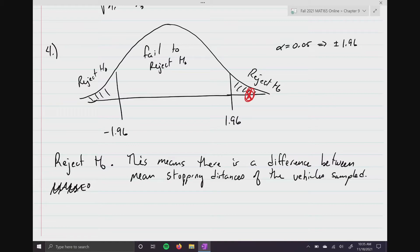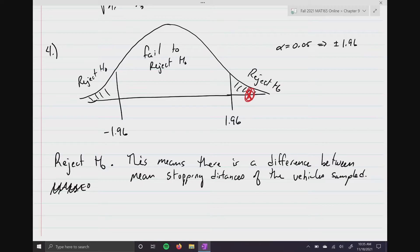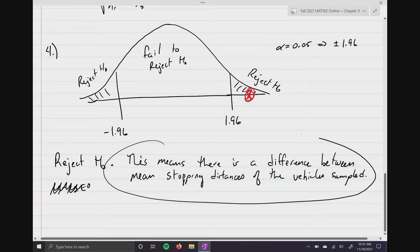We don't know what that difference is — we just know there is a difference. The data supports the alternative hypothesis that something is going on. Obviously you'd want to dive deeper, maybe collect more samples or ask different questions. Perhaps the two cars are different weights or the tires were different. But at the 30,000-foot view, there's a difference between the mean stopping distances of the vehicles sampled.